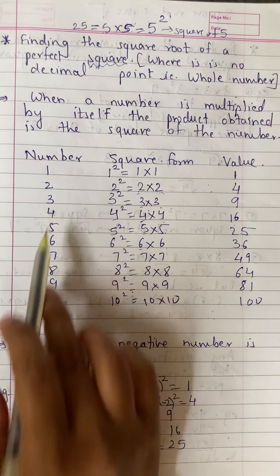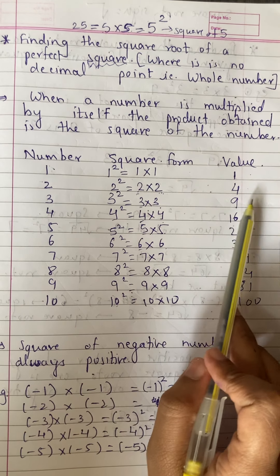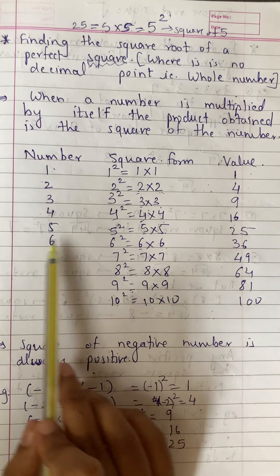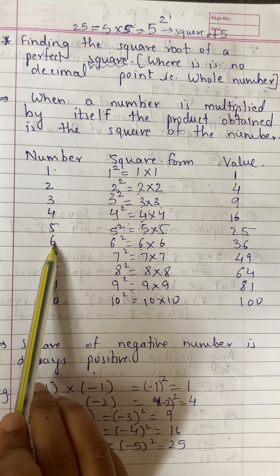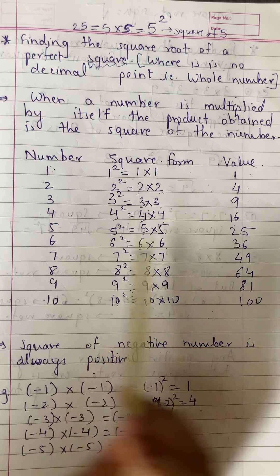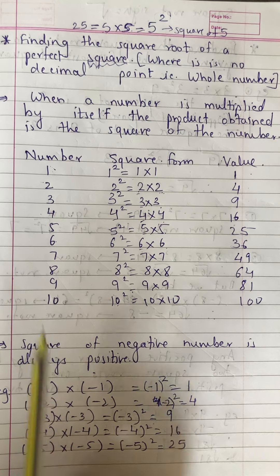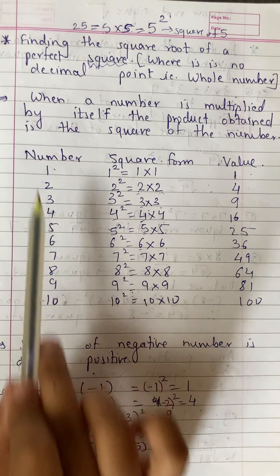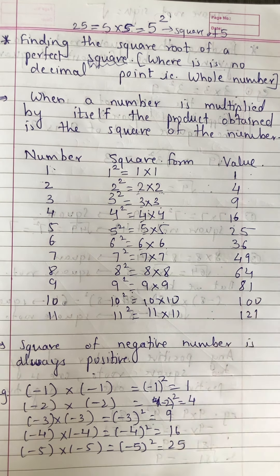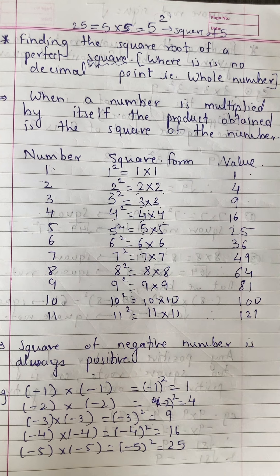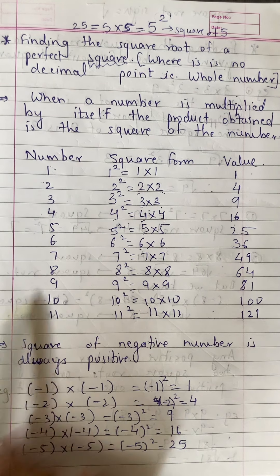You should know all the squares from 1 to 10. Square of 1 is 1, 2 is 4, 3 is 9, 4 is 16, 5 is 25, 6 is 36, 7 is 49, 8 is 64, 9 is 81, and 10 is 100. You can memorize all values up to 10. Beyond that, like 11 into 11, you can calculate: 11 into 11 is 121.